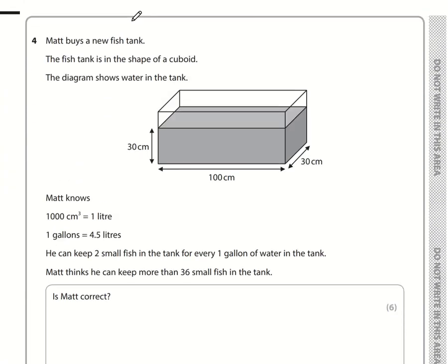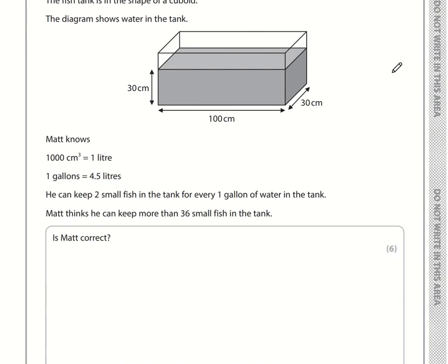Question 4. Matt buys a new fish tank. The fish tank is in the shape of a cuboid. The diagram shows the water levels: 30 by 100 by 30. Matt knows that 1,000 cubic centimetres is 1 litre. A gallon is 4.5 litres. He can keep two small fish for every gallon of water. Matt thinks he can keep more than 36 small fish in the tank. We need to work out the volume in gallons.